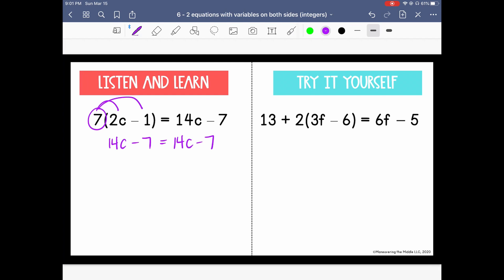So if I start collecting my variables, let's say I want to bring them to the left, I'm going to subtract 14c and you'll quickly see that this does actually cancel the variables from both sides.